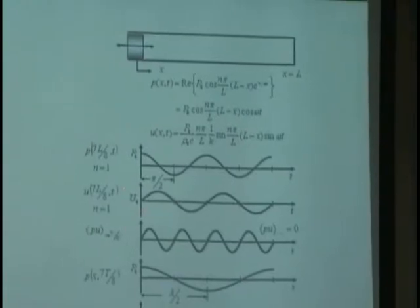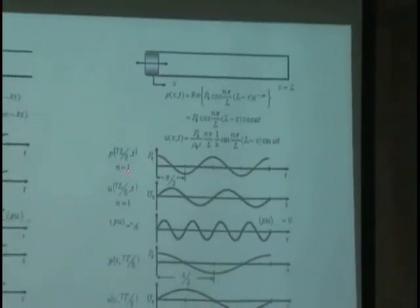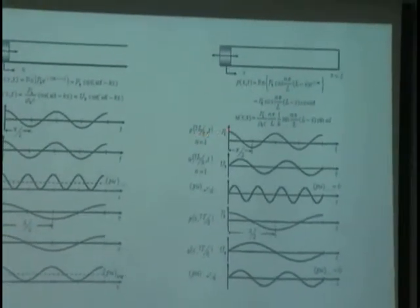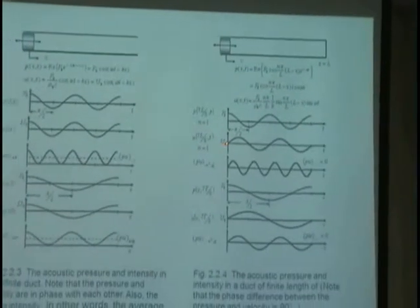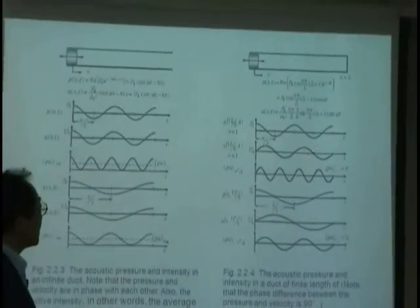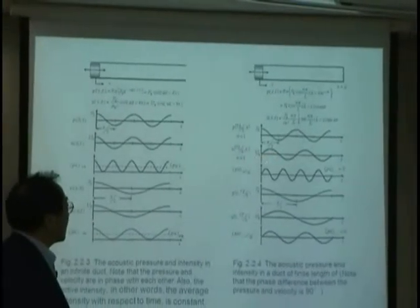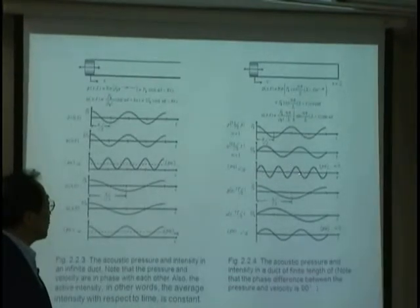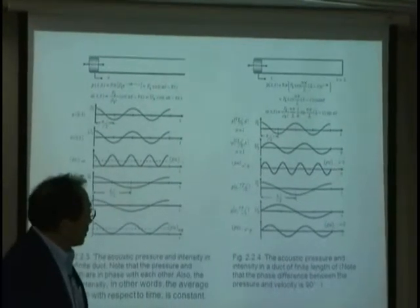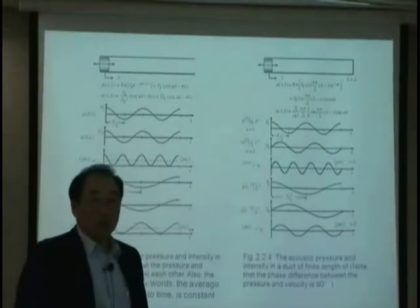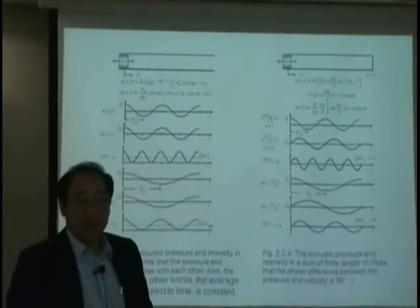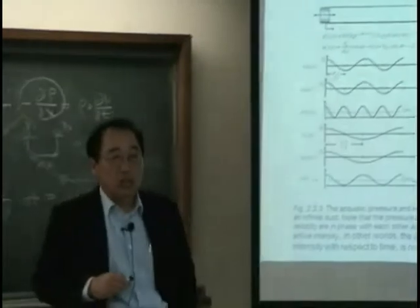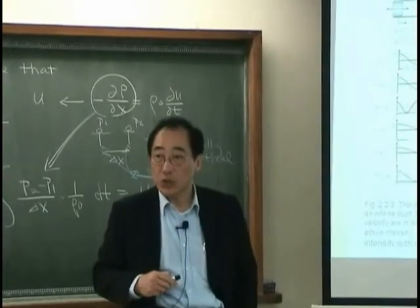Okay. Then what we can see, the pressure oscillation at certain point is like this. And the velocity oscillation is like this. Not like this. And the multiplication of this too will give me the intensity fluctuation like this. But, the mean intensity is zero.